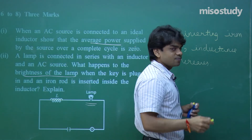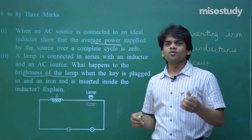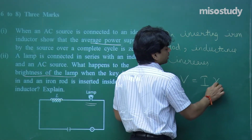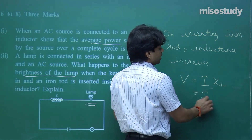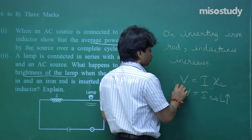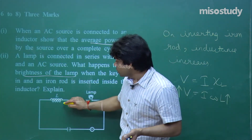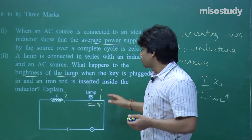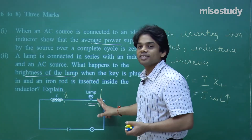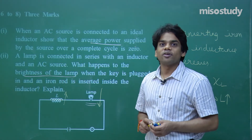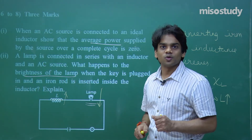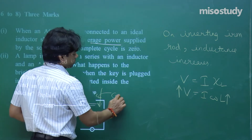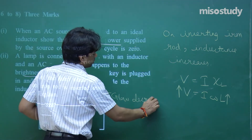As inductance L increases, V across the inductor increases. If voltage is going to increase across the inductor, voltage is going to decrease across the bulb. The potential drop across the bulb decreases, and if the potential drop decreases, the glow is going to decrease. So the glow decreases.